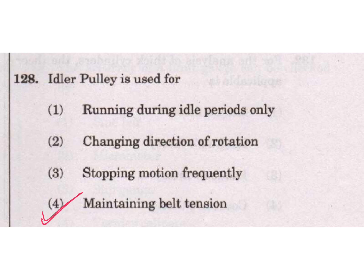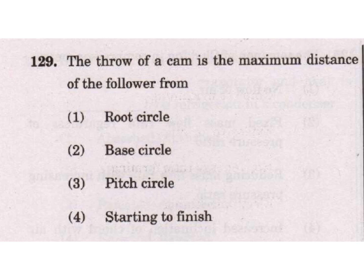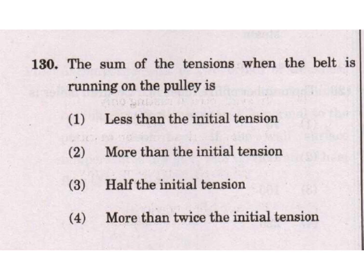The throw of a cam is the maximum distance of the follower from the base circle. The sum of tensions when the belt is running on the pulley is more than twice the initial tension — option 4 is the answer.